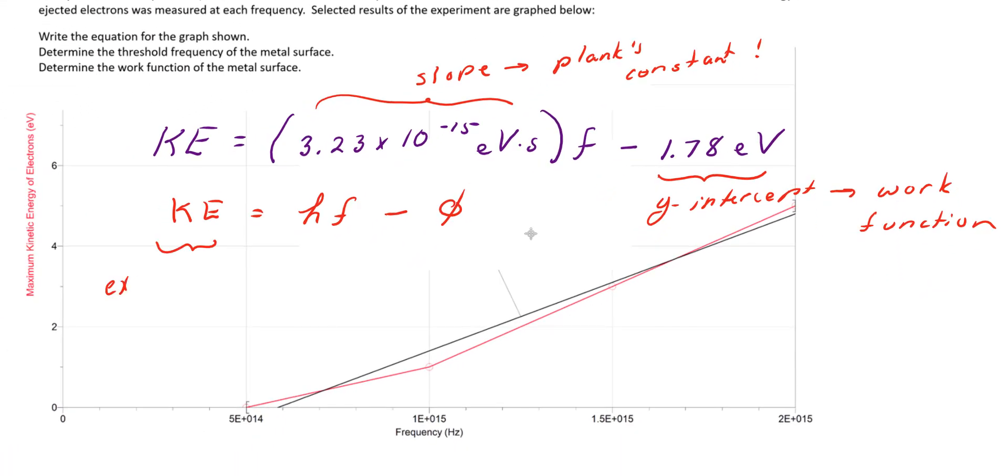Taking another look at the photoelectric effect equation, ke, kinetic energy, is the excess energy of the released electrons, or the electrons got kicked out of the atom. Whereas hf, Planck's constant times the frequency of the photon, is the energy of the photon that it brings in to the atom.